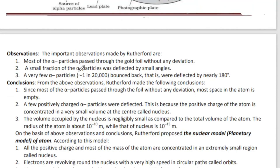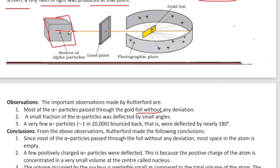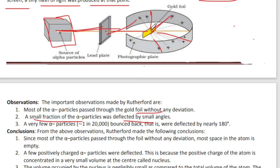The key observations were: most of the alpha particles passed through the gold foil without any deviation; a small fraction of alpha particles were deflected by small angles; and very few alpha particles bounced back — that is, were deflected by nearly 180 degrees.